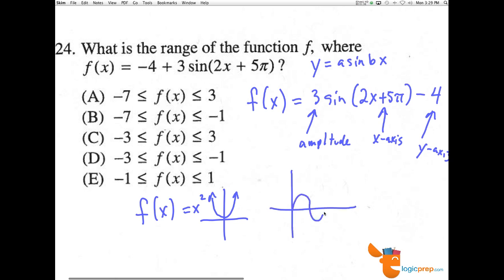If we have a regular y equals sine x, the amplitude is the distance from here to here, right? So normally this equation would go up 3 and down 3. However, the whole thing is being shifted down 4. So instead of from 3 to negative 3,